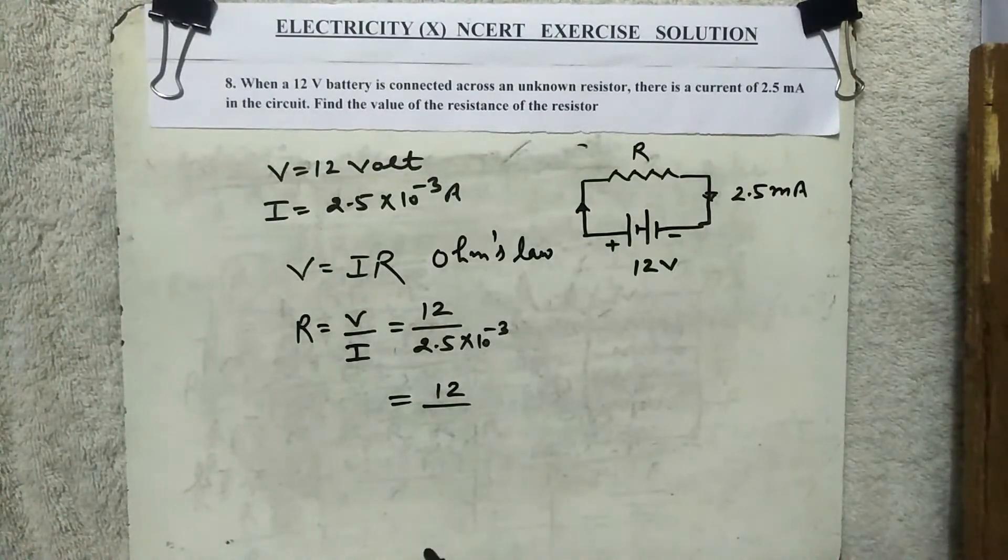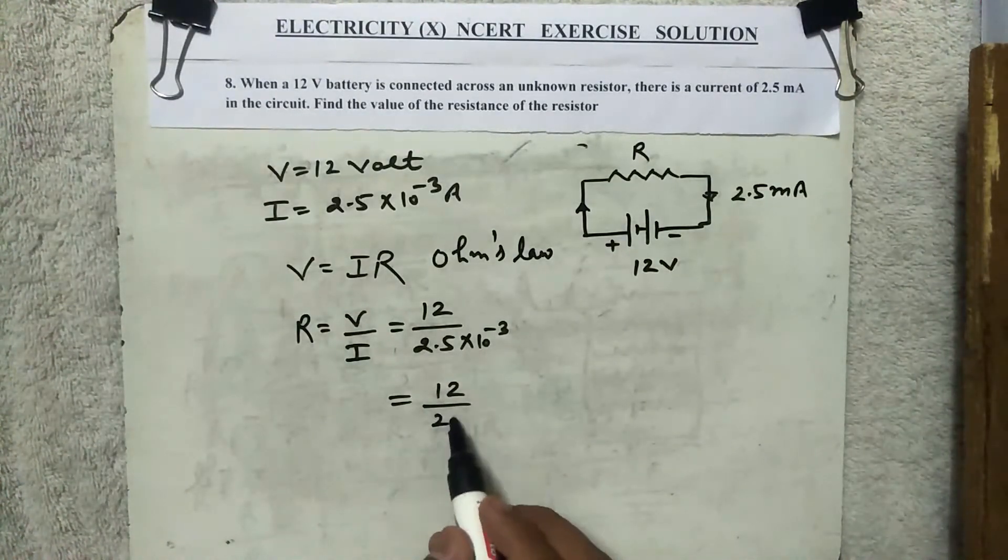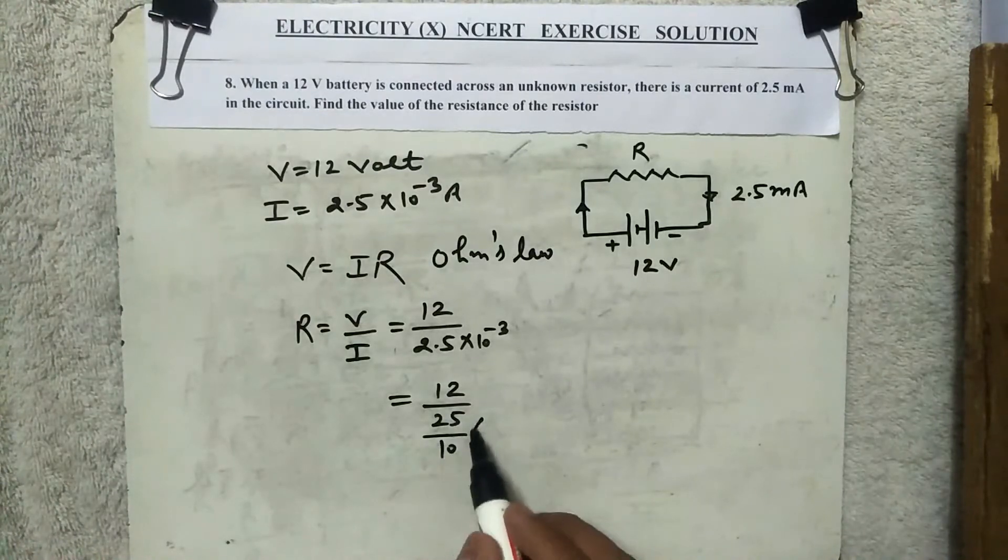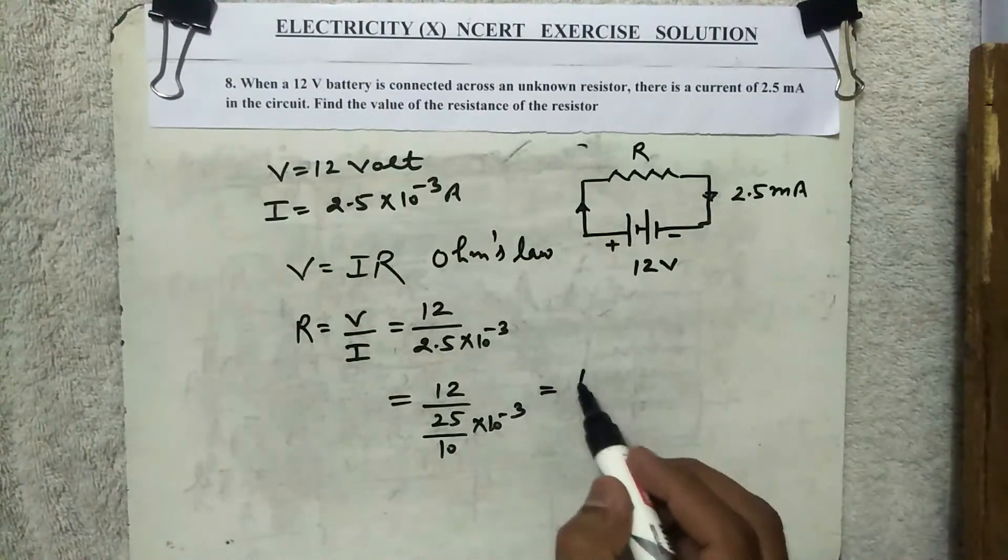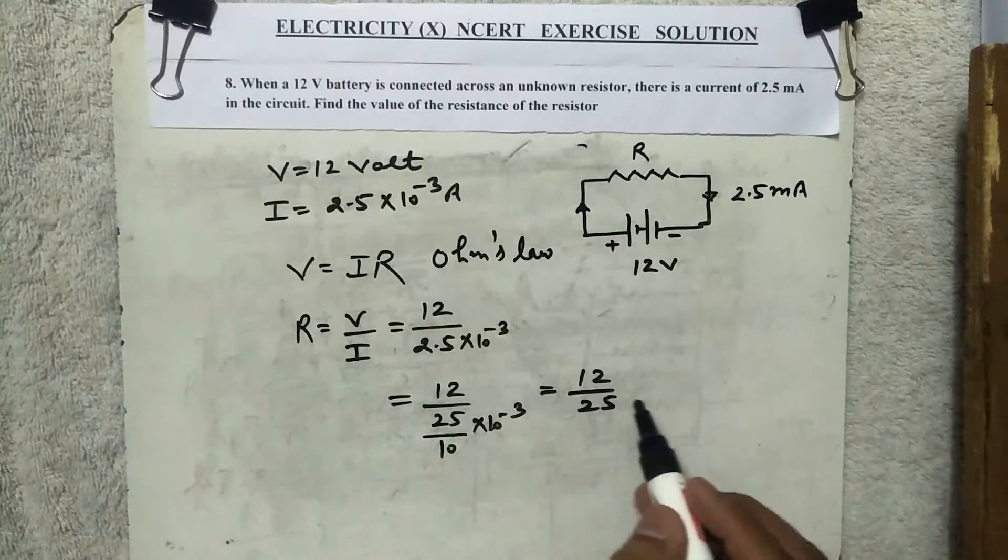12. I have written 2.5 into 10 raised to power minus 3. From here how much will come? 12 divided by 2.5.